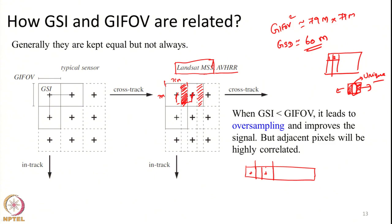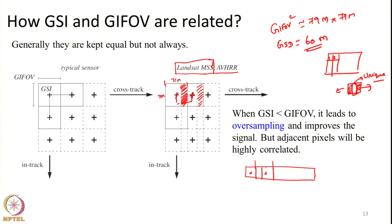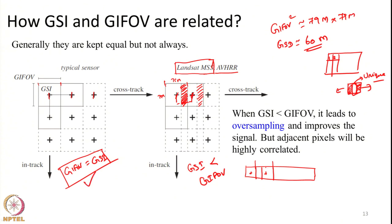A typical remote sensing system nowadays will not have this kind of oversampling issue — it will have the GSD set equal to GIFOV. Whatever the GIFOV of the sensor is, the GSI will be set exactly to sample that particular distance, so there will not be any overlapping information nor any gaps. GIFOV and GSI are made equal in a typical remote sensing system. The Landsat MSS example is a case where GSI is smaller than GIFOV — done to improve signal quality, but resulting in highly correlated adjacent pixels.